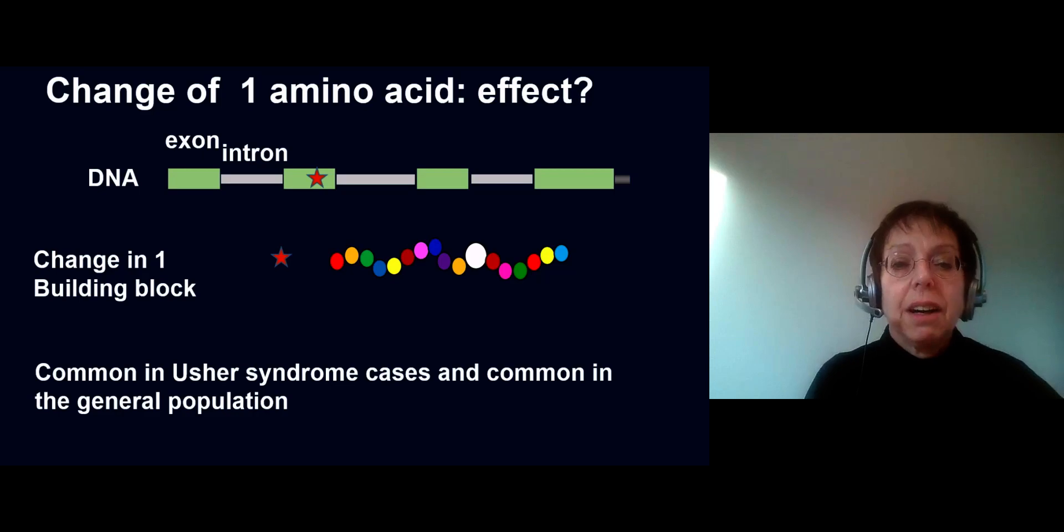The first thing we look at is whether the change is rare, because when it would be common in the population, it could not be the cause of Usher syndrome. We look at whether there is a big change in the chemical characteristics of this amino acid and the one that should be there.